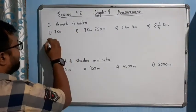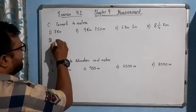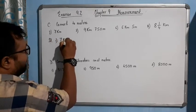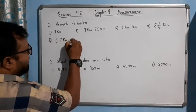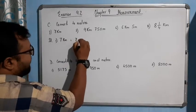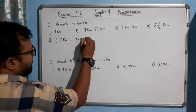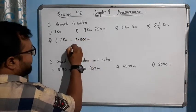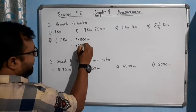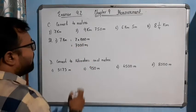Solution for number one: 7 kilometers means 7 into 1000 meters, which equals 7000 meters. It's very simple.